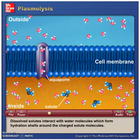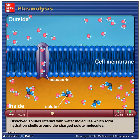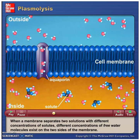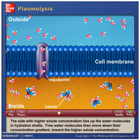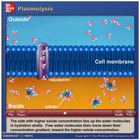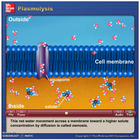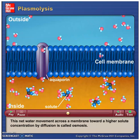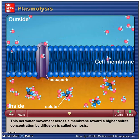Dissolved solutes interact with water molecules, which form hydration shells around the charged solute molecules. When a membrane separates two solutions with different concentrations of solutes, different concentrations of free water molecules exist on the two sides of the membrane. The side with higher solute concentration ties up the water molecules in hydration shells. Free water molecules then move down their concentration gradient toward the higher solute concentration. This net water movement across a membrane toward a higher solute concentration by diffusion is called osmosis.